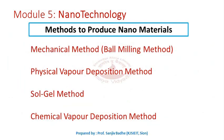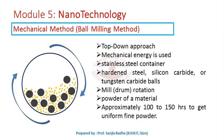Now let us discuss some methods used to produce nanomaterials. All these methods use either a top-down or bottom-up approach. We will start with the mechanical method called ball milling, then physical vapor deposition, then sol-gel method, and chemical vapor deposition. Ball milling is a mechanical process that uses a top-down approach, where bigger size particles are reduced into smaller and smaller sizes. All structural and chemical changes are produced by mechanical energy.